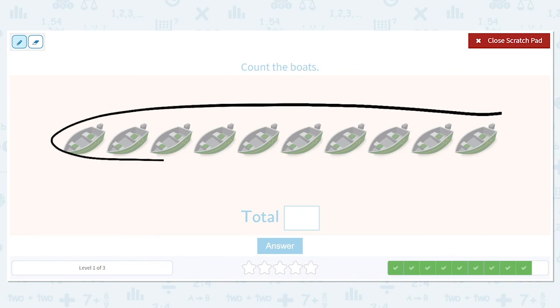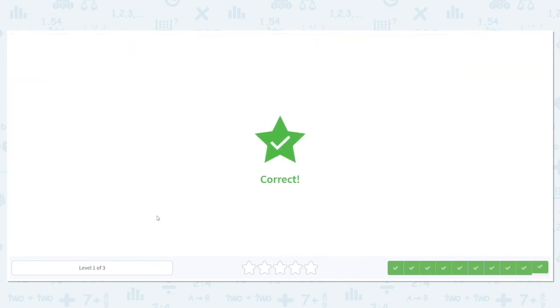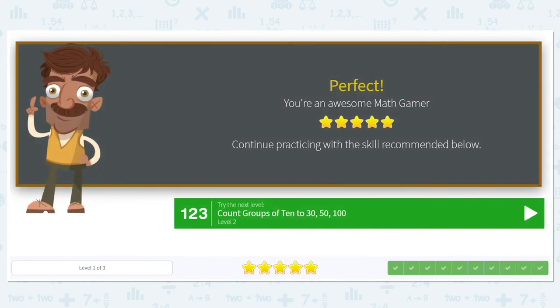I have one row of 10. Do I need to circle any more boats? No. So what's our final answer? 10. Great job. You are all done. See you next time.